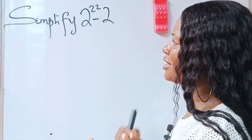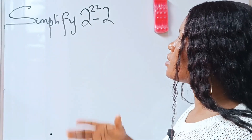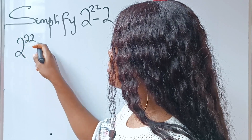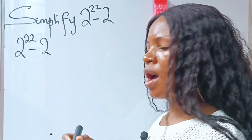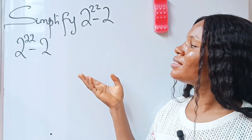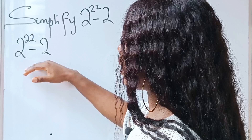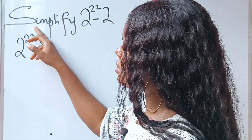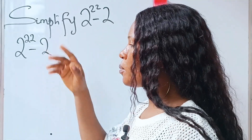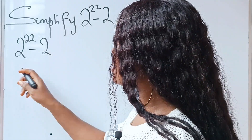Hi, welcome to my channel. Today we are going to solve a Harvard entrance exam question. We are asked to simplify 2 to the power of 22 minus 2. Let's solve this together and see why many students found it difficult. The only complex part here is 2 to the power of 22, so we are going to concentrate on simplifying that.